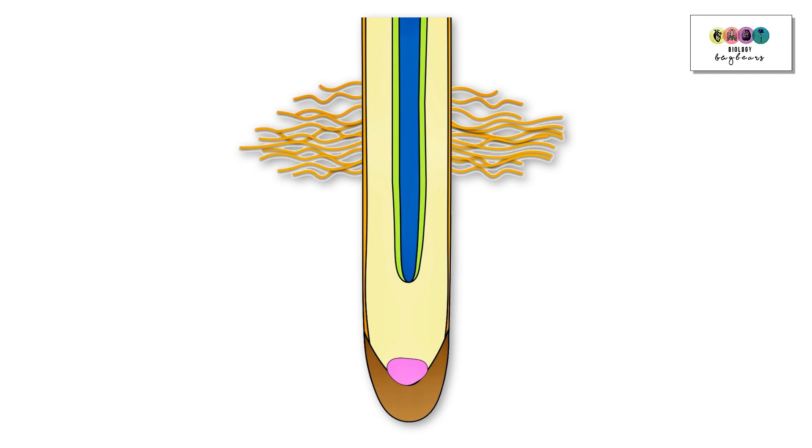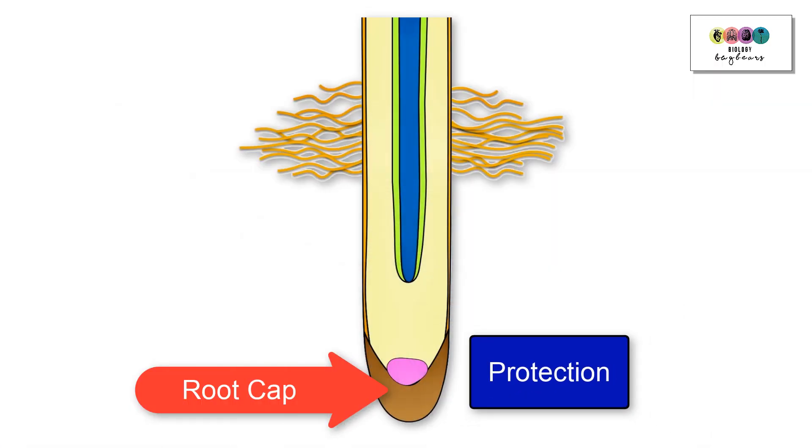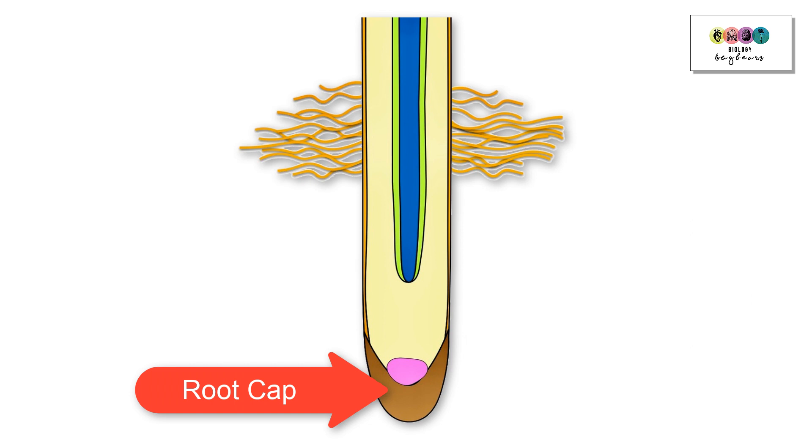So at the tip of the root you find the root cap, and its function is protection. The root cap is there to protect the root as it grows downwards.